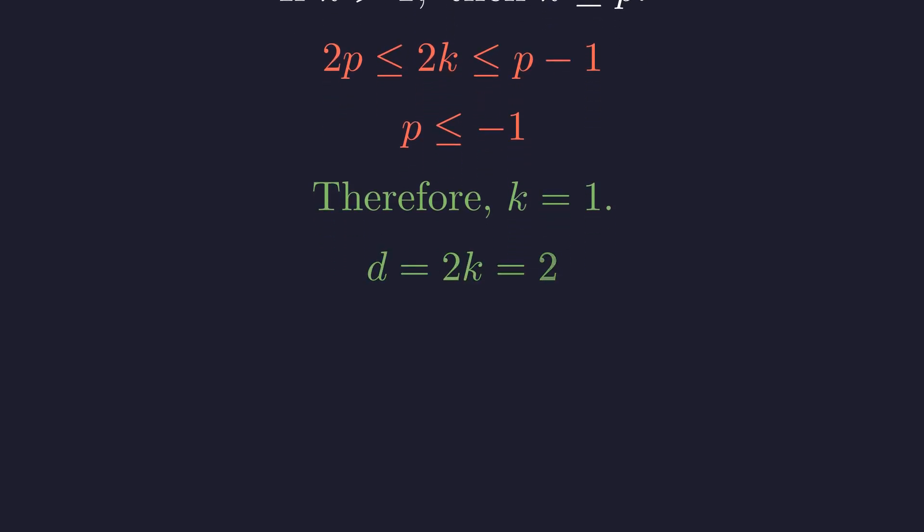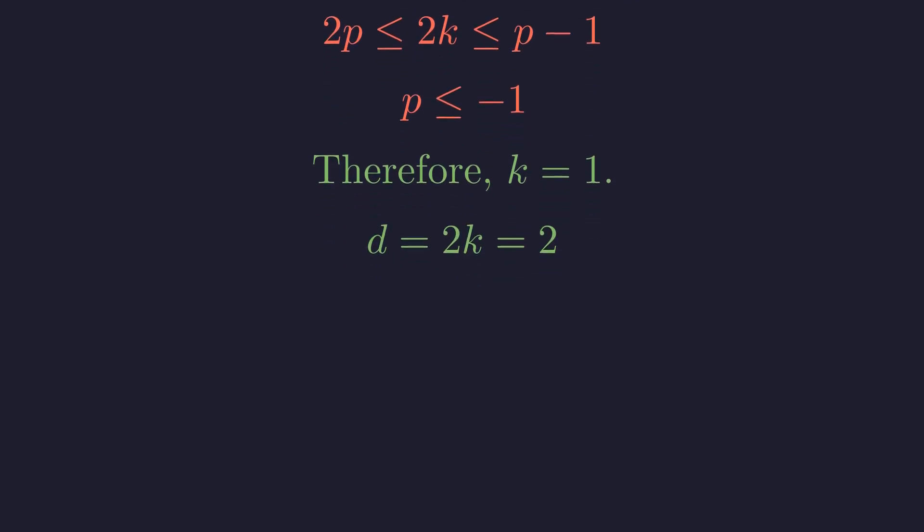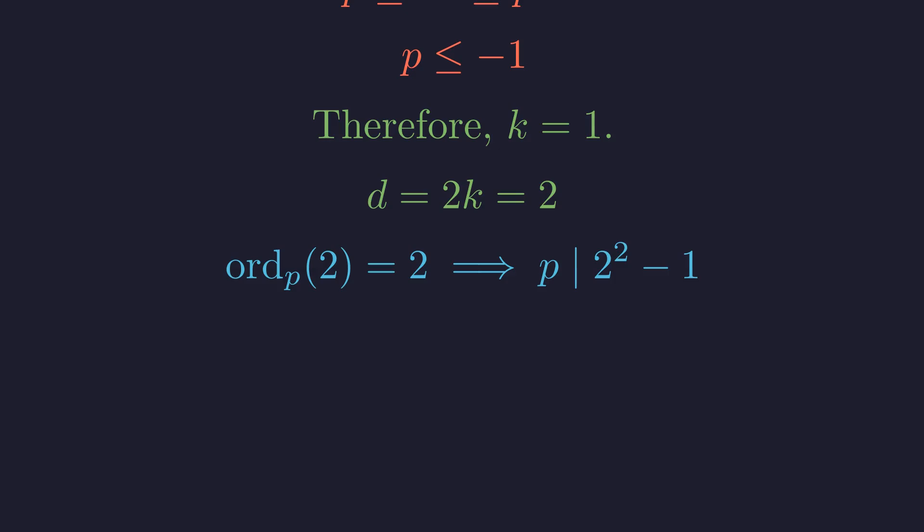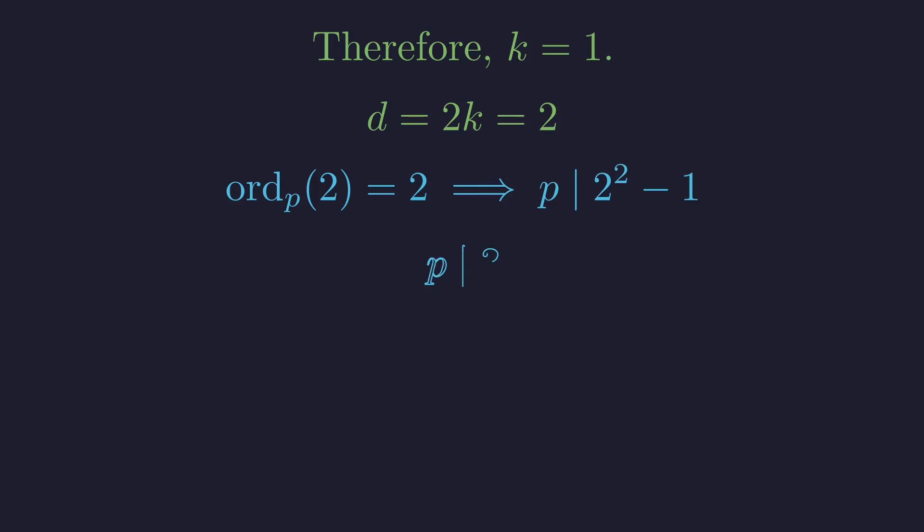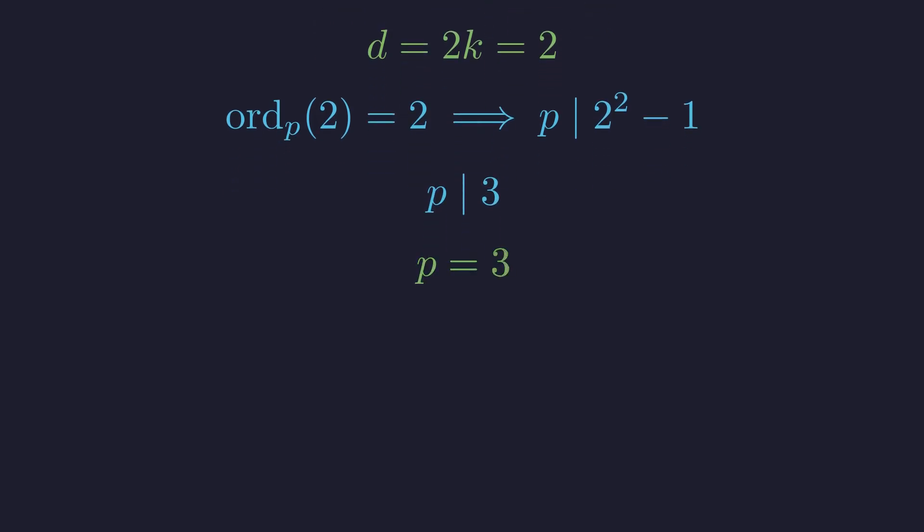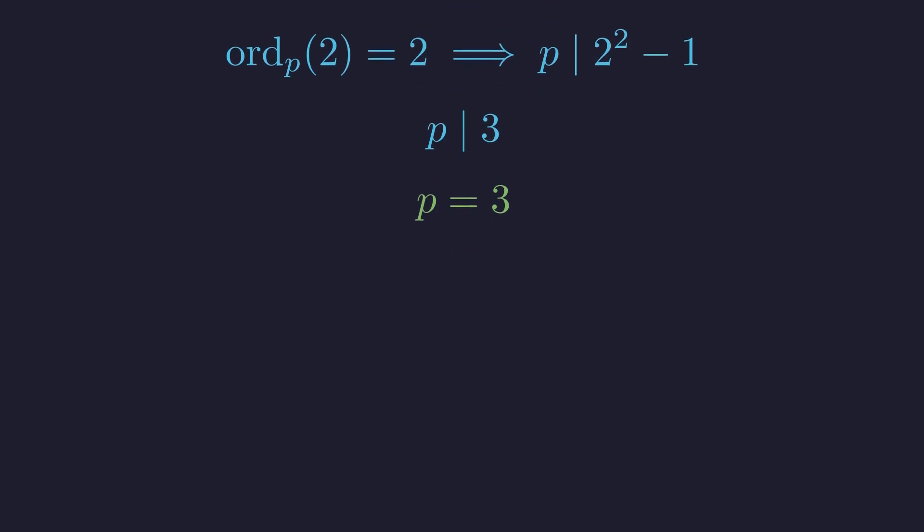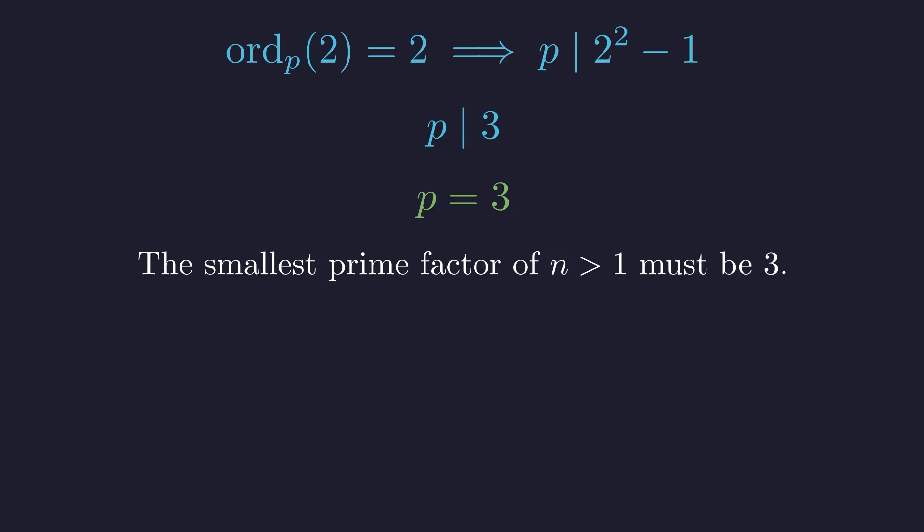The only possibility is that k equals 1. If k is 1, then d must be 2. If the order of 2 modulo p is 2, that means p must divide 2 squared minus 1. This simplifies to p dividing 3. Since p is a prime number, the only possibility is p equals 3. This is a monumental breakthrough. If any solution n greater than 1 exists, its smallest prime factor must be 3.